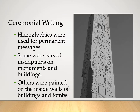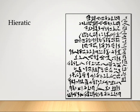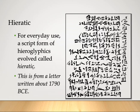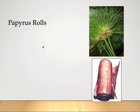Some inscriptions were carved on monuments and buildings, and others were painted inside the walls of buildings and tombs. There is also a less famous writing in Egypt called hieratic. For everyday use, they used this script form of hieroglyphics, which evolved from it. This particular hieratic shown here is from a letter written about 1790. It was developed because writing hieroglyphics in script form would be challenging, so they evolved it into hieratic writing.